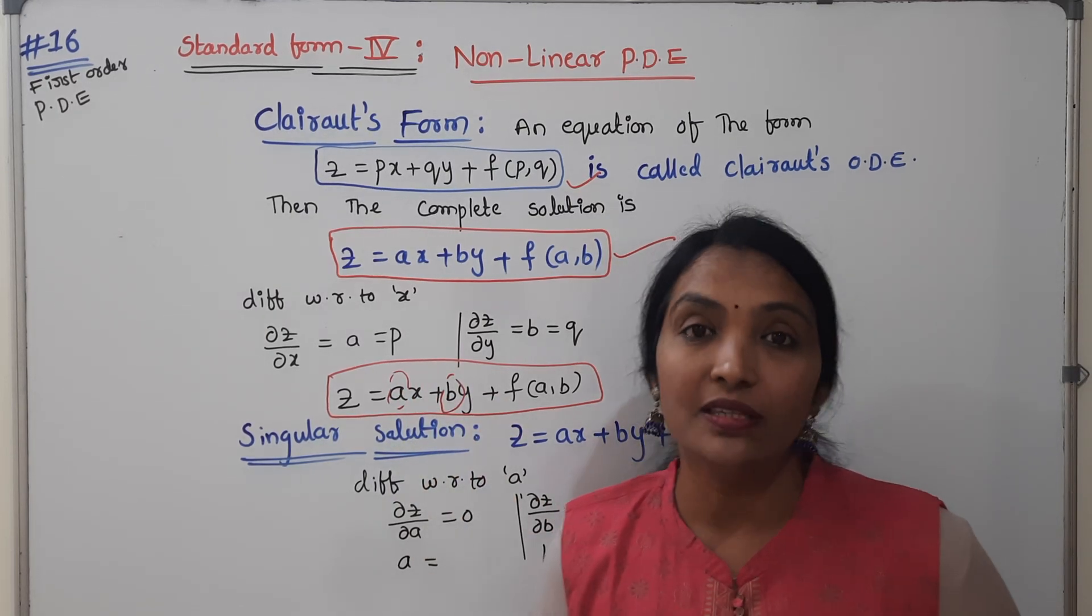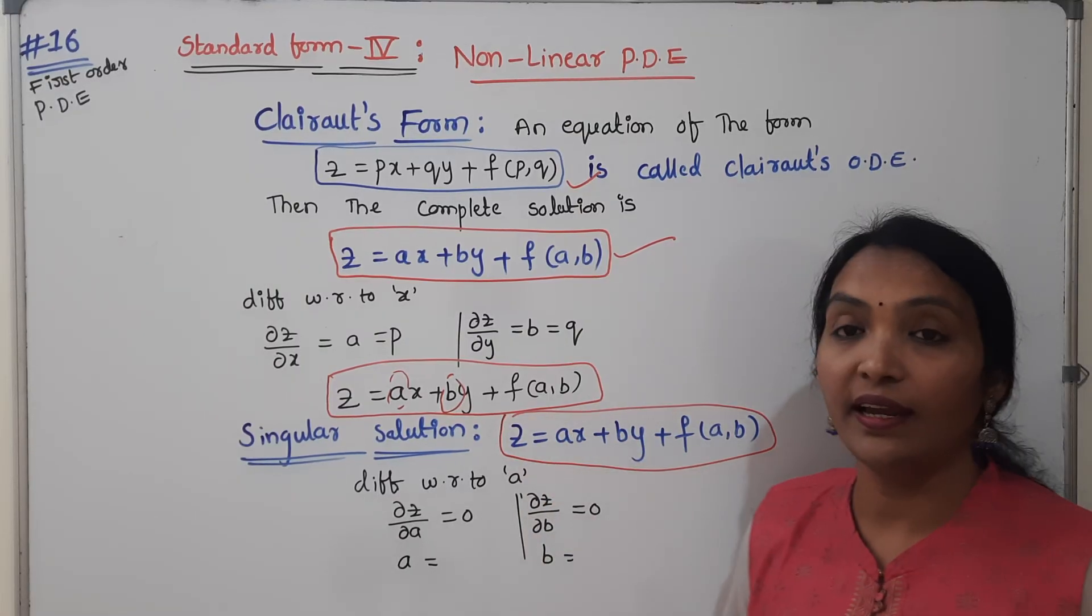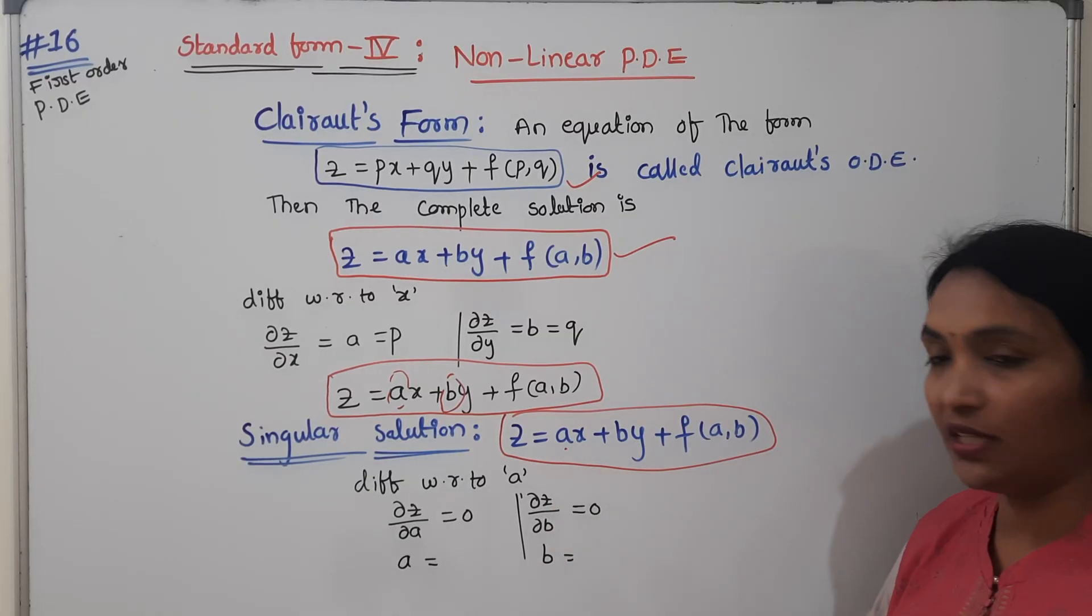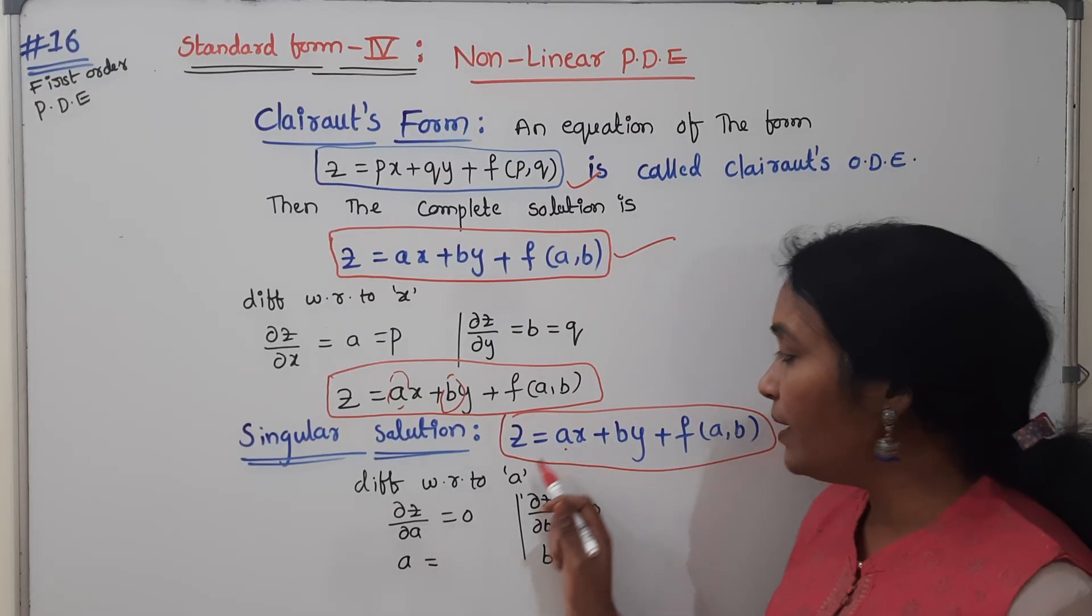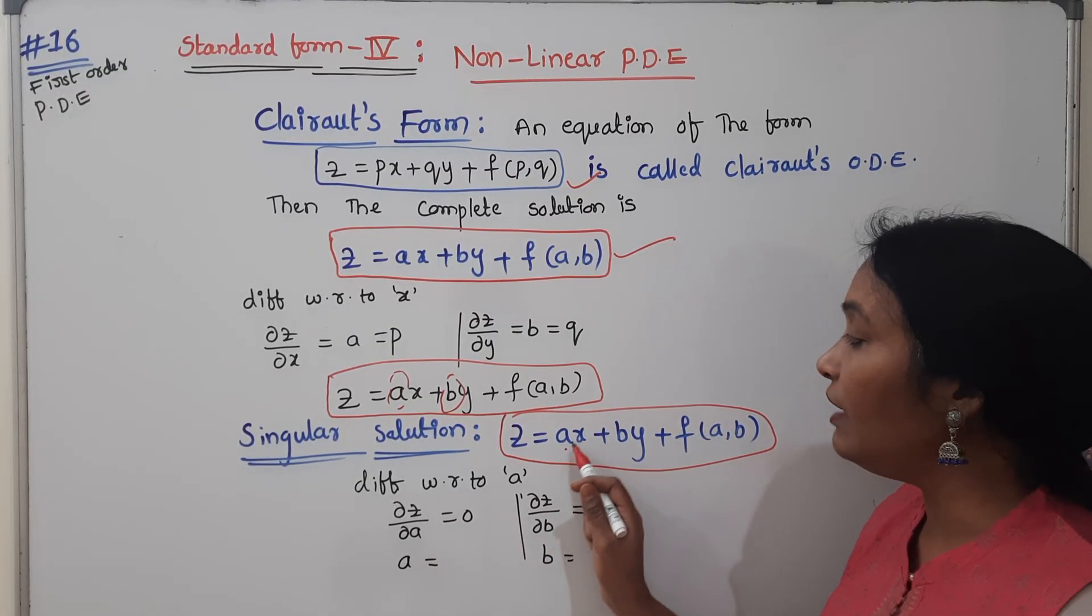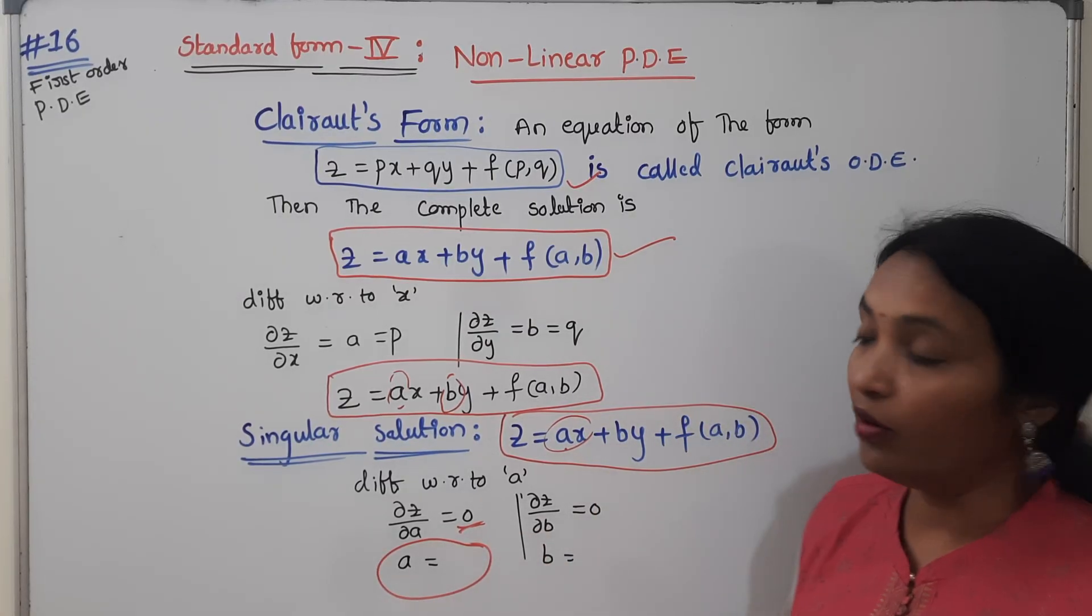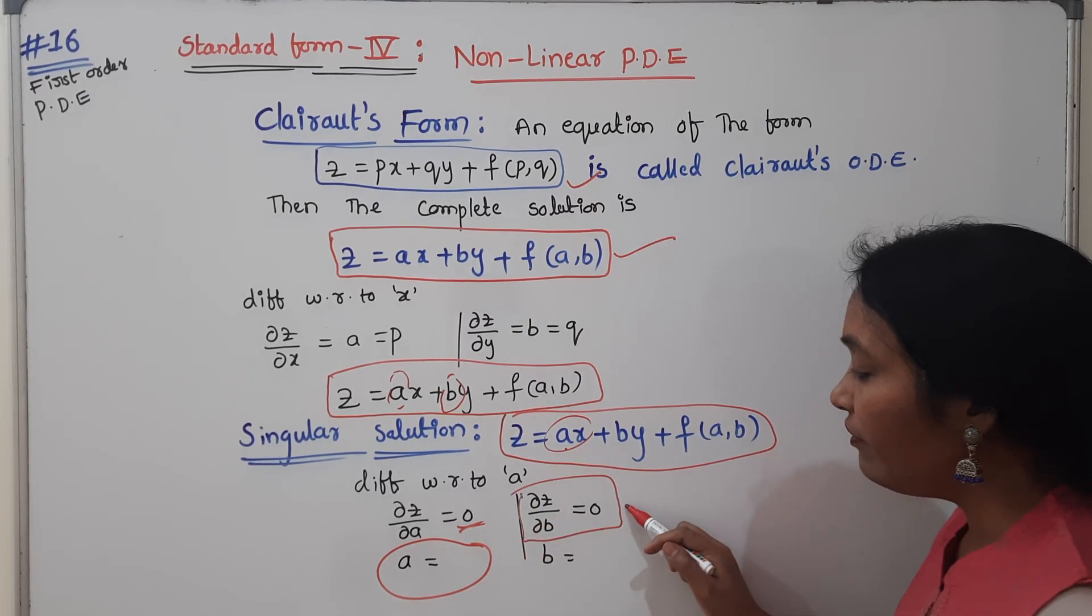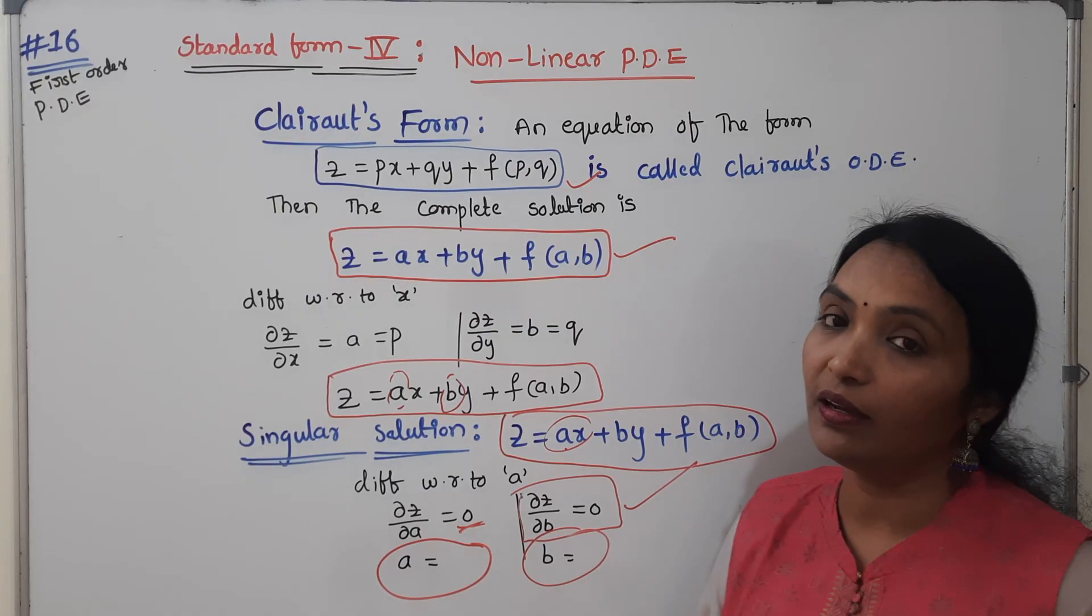By using the singular solution, this is our complete solution. When I eliminate A, differentiate the same equation with respect to A once. If you differentiate with respect to A, equate that value equal to zero, then automatically you will get A value. Same here, differentiate with respect to B and equate equal to zero, then you will get B constant.